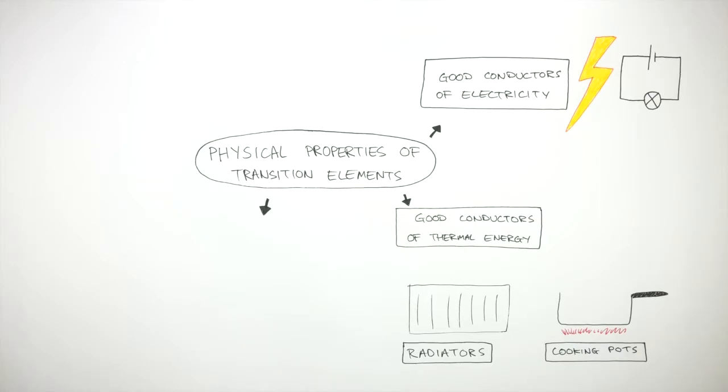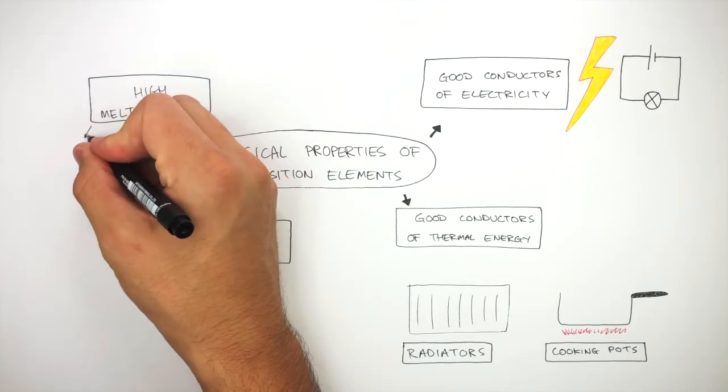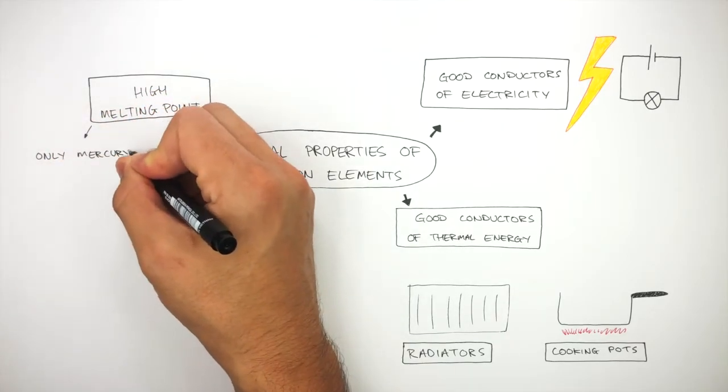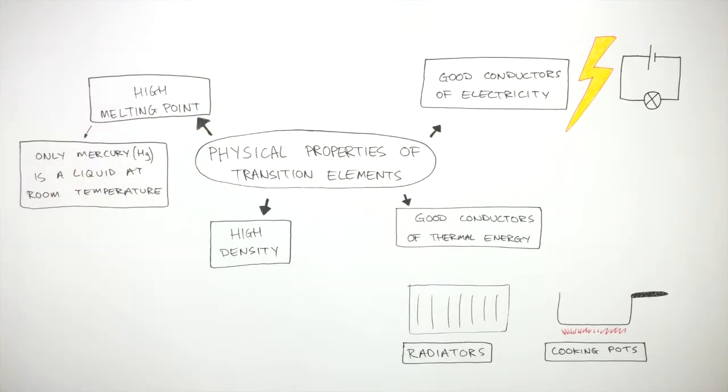Transition elements also have a high density and a high melting point. All transition metals are solids at room temperature except for mercury. Only mercury, Hg, is a liquid at room temperature, but it is still a metal.